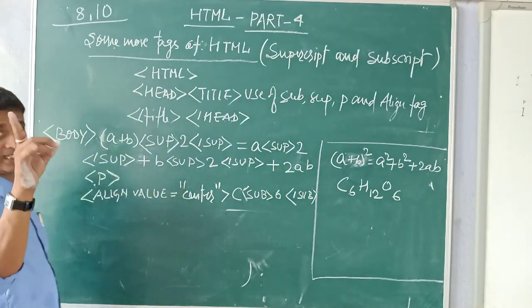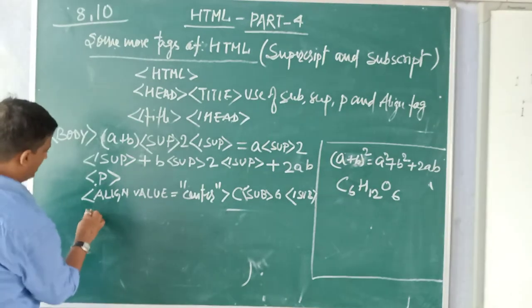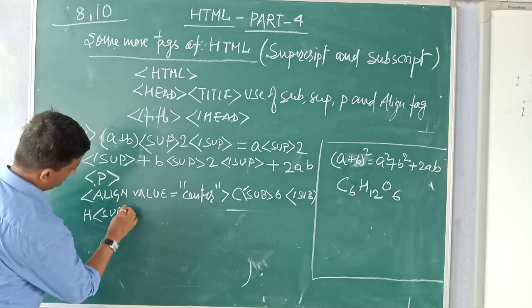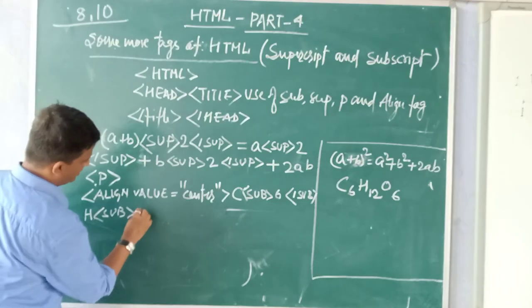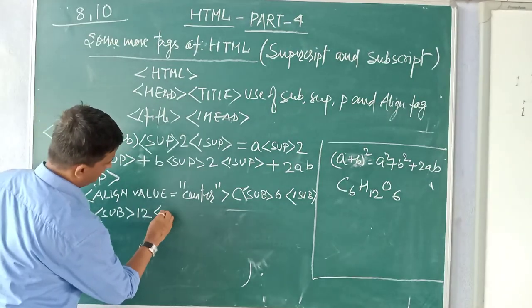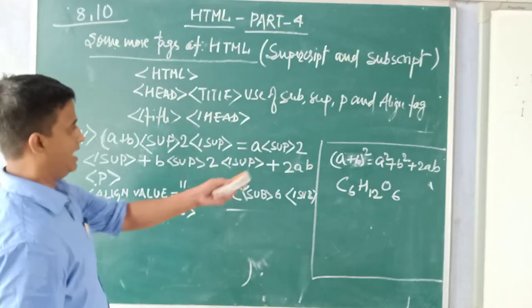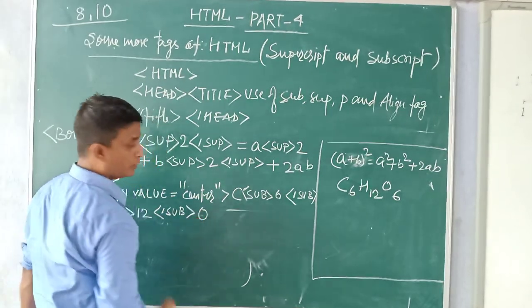C subscript closed sub. Now H without giving any space you will type H. Then again sub. Sub, then the value of sub 12. Then close the sub.